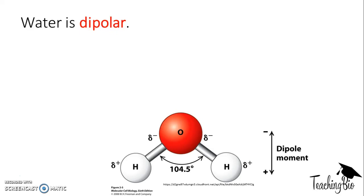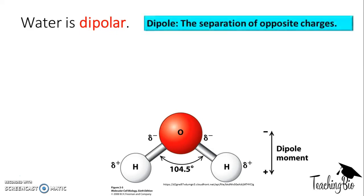To begin with, you need to understand what water is, and water is in fact dipolar. You don't need to know much detail about this, but it helps you to understand why water is dipolar and how it can undergo hydrogen bonding. A dipole is defined as the separation of opposite charges, and if you do A-level chemistry you will learn this.